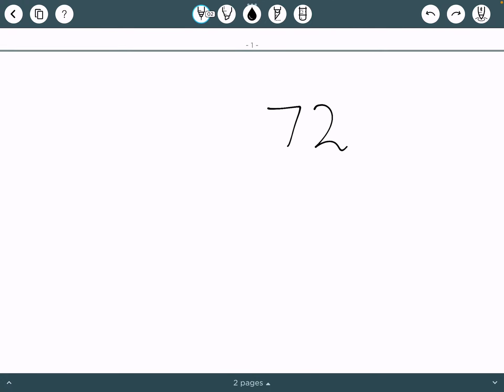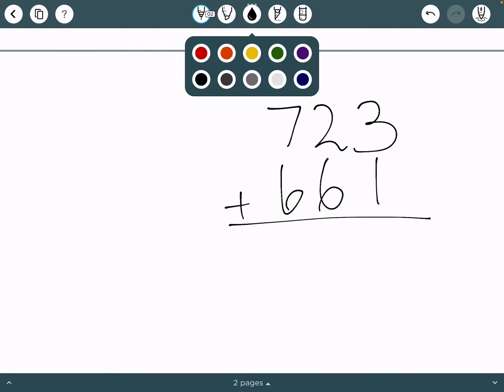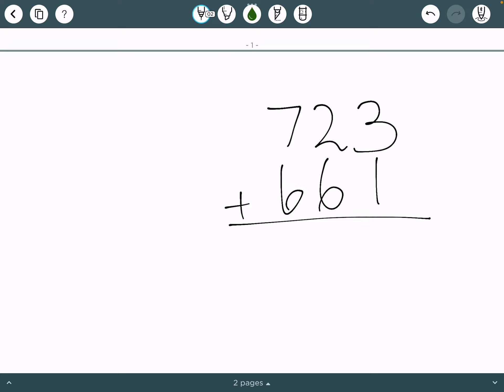723 plus 661. Now, to solve for the answer. 3 plus 1 is 4, 2 plus 6 is 8, and 7 plus 6 is 13.